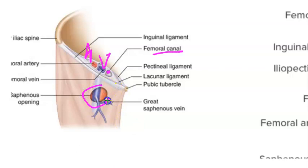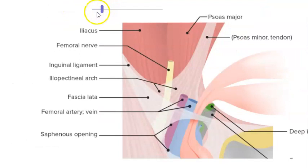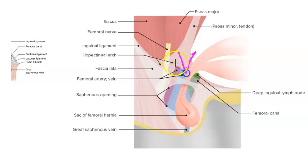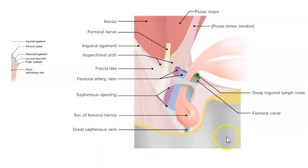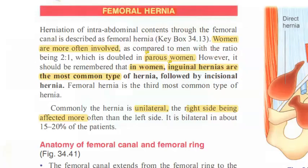The images here show the femoral canal with the vein, the artery, and the saphenous opening. Another photo shows the hernia and its contents — the vein, artery, nerve, and the lymph node of Cloquet.